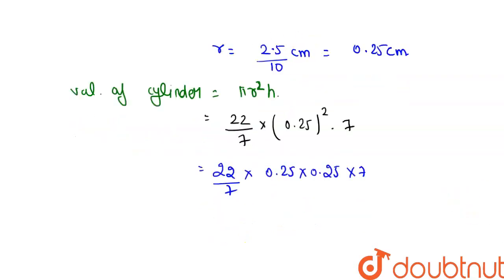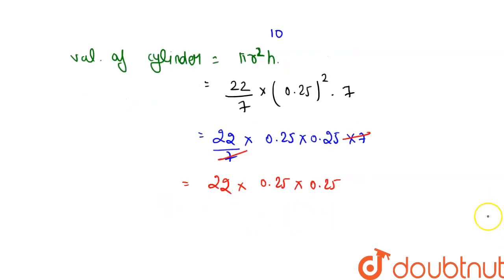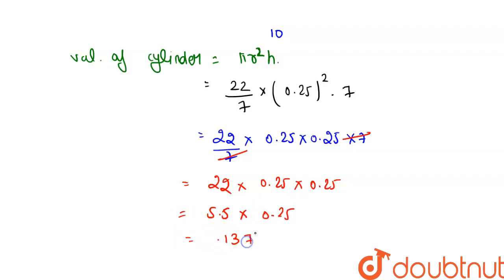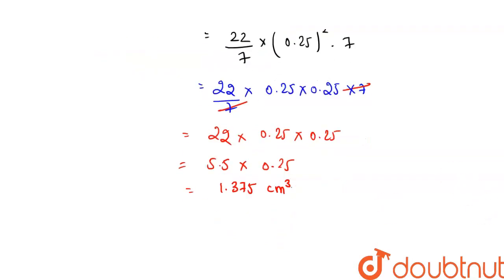Here, 22/7 — the 7 cancels out — giving 22 × 0.25 × 0.25. That is 22 × 0.0625, which equals 1.375. So the volume of the barrel is 1.375 cm³.